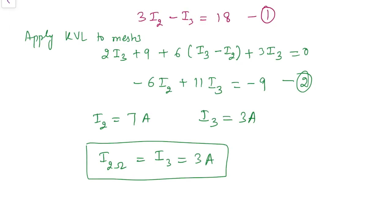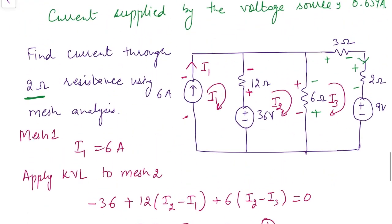When a current source is in the outer branch, the number of KVL equations needed is one less than the number of meshes, since one answer is obtained directly. In the next video, I will discuss mesh analysis when a current source is common to two meshes and how to solve that case.